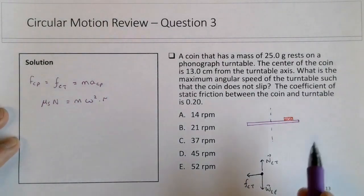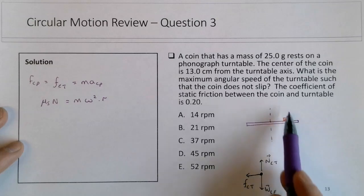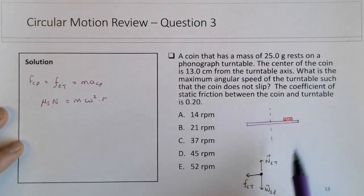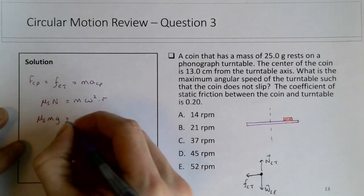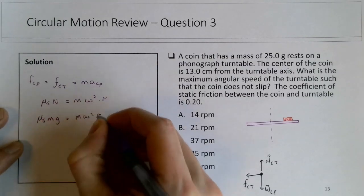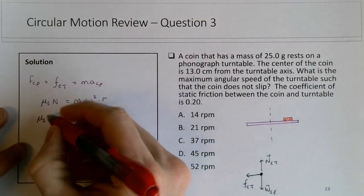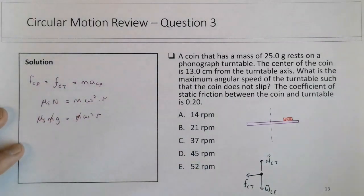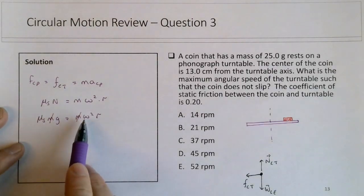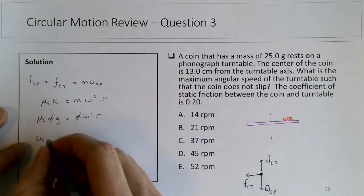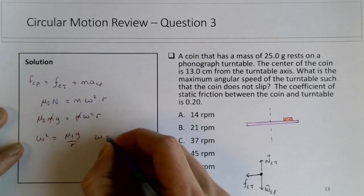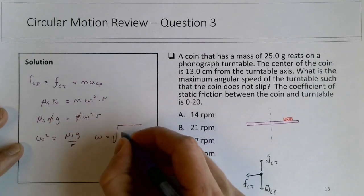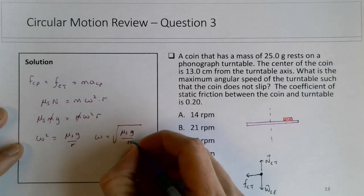The normal in this case, there's no acceleration of the coin perpendicular to the turntable, so these two would be equal in magnitude, so mu_s mg equals m omega squared R. And this is where I stated earlier why the mass cancels, so we don't actually need the mass of the coin. We're trying to solve for omega, so omega squared will be equal to mu_s g divided by R, so omega will be equal to the square root of mu_s g divided by R.